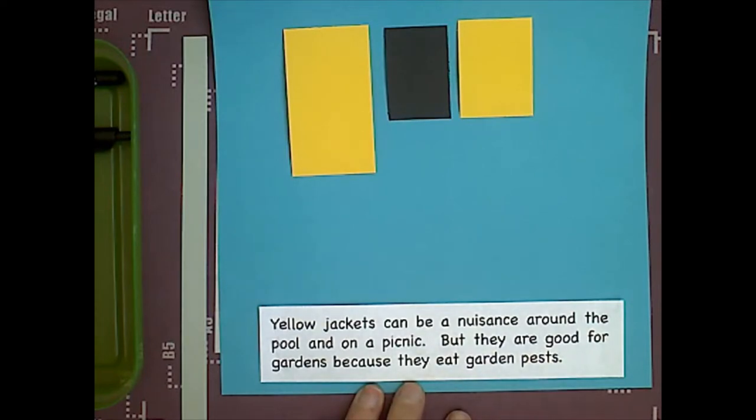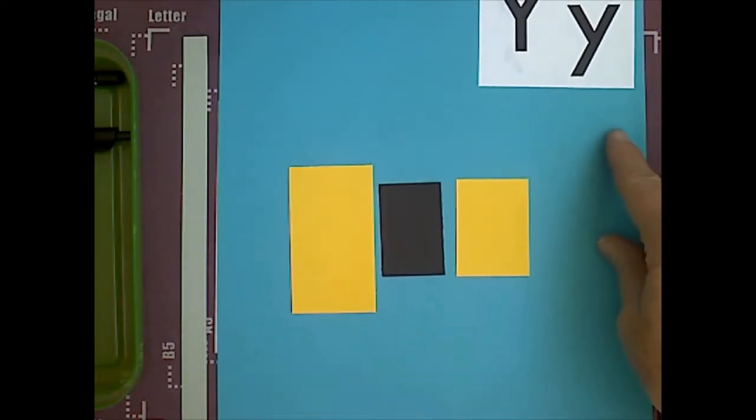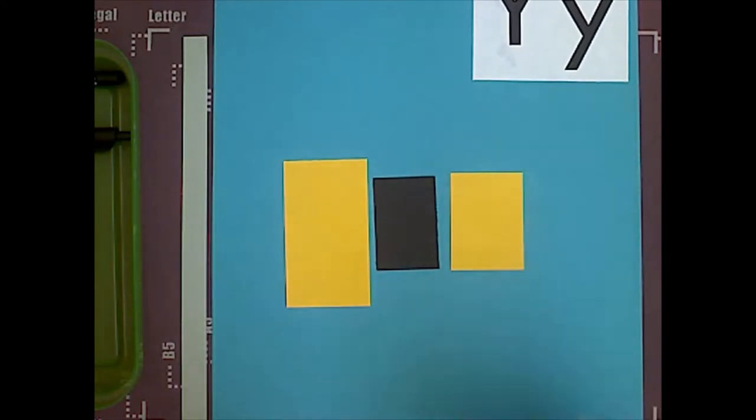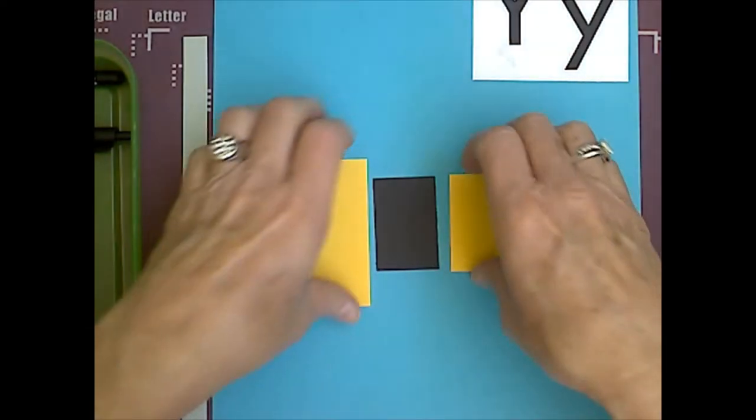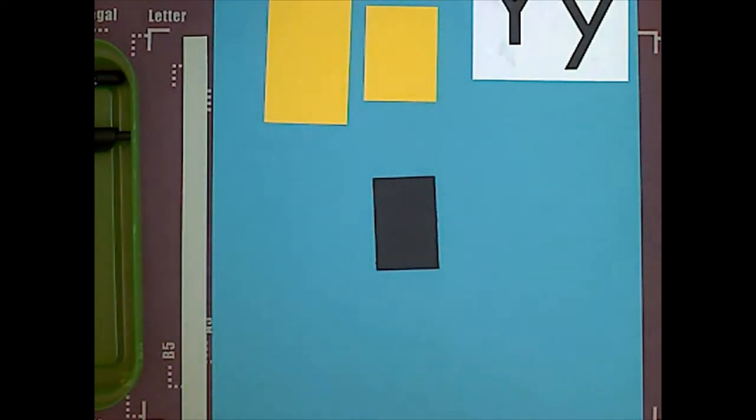So, we might not like them because we don't want to get stung by them, but they are very helpful insects. Okay, so the first part we're going to use is the black rectangle. I'm just going to leave these up here, because as you see, there's not very many pieces for this.